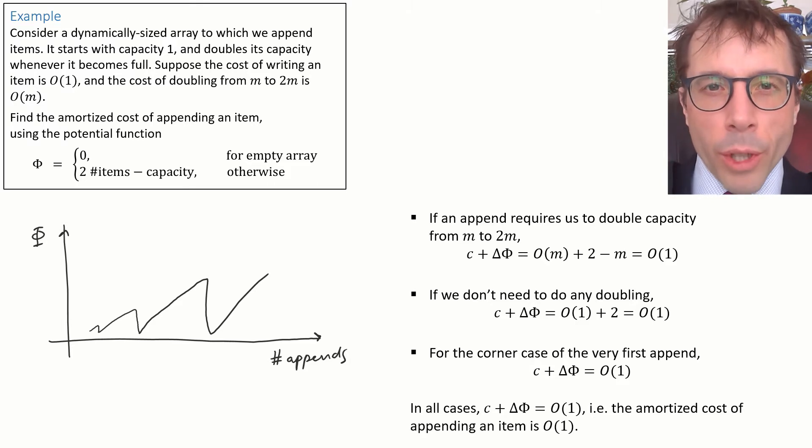So, in every possible case, the amortized cost of appending an item is big O of 1, QED.